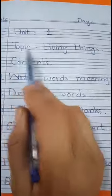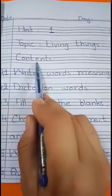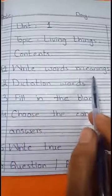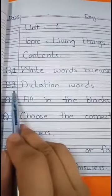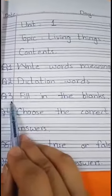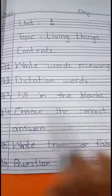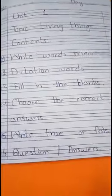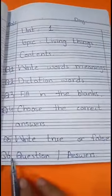Unit 1, topic name: Living Things. Dear students, first we do contents. Question 1: Write words meaning. Question 2: Dictation words. Question 3: Fill in the blanks. Question 4: Choose the correct answer. Question 5: Write true or false question.